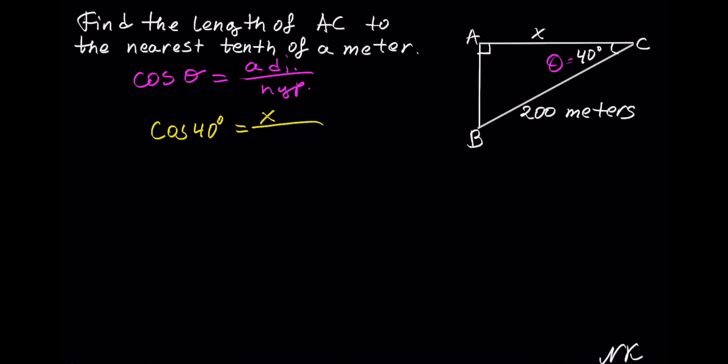Divided by the hypotenuse, which is equal to 200 meters. So divided by 200 meters, and I'm going to write the short M for meters.